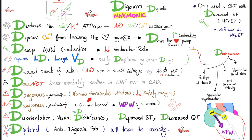Digoxin is a dangerous drug in general — it has a narrow therapeutic window with a low safety margin, particularly in Wolff-Parkinson-White syndrome. Side effects include disorientation, visual disturbance, and seeing yellow-green halos. It can also depress your ST segment and decrease the QT interval on EKG.